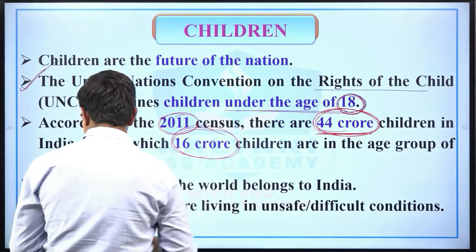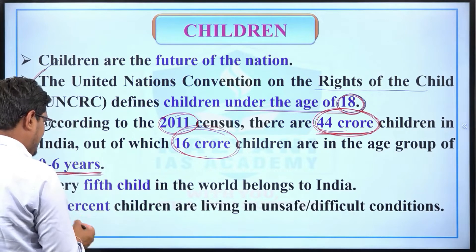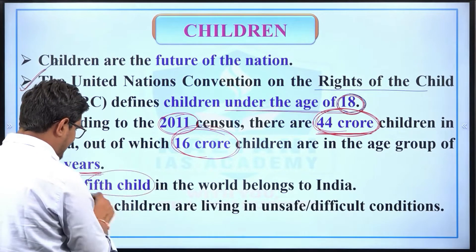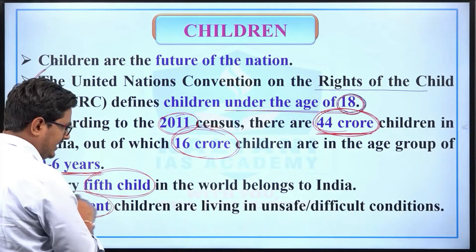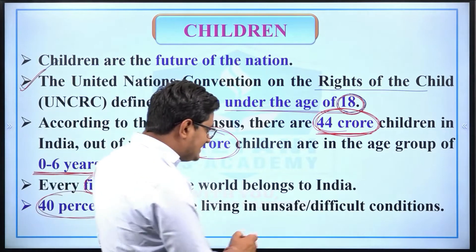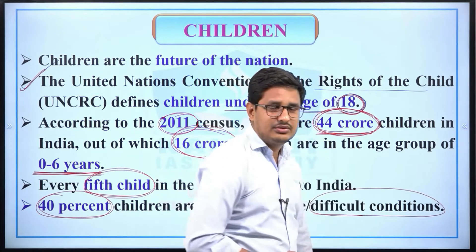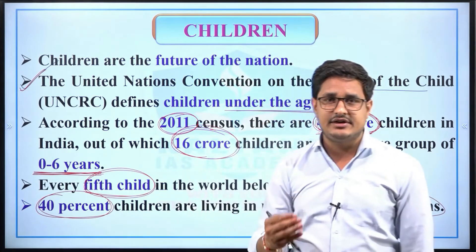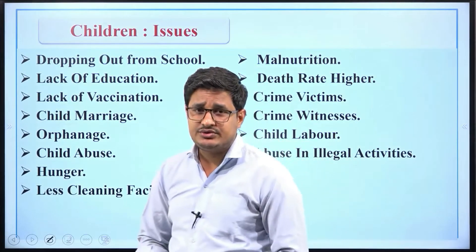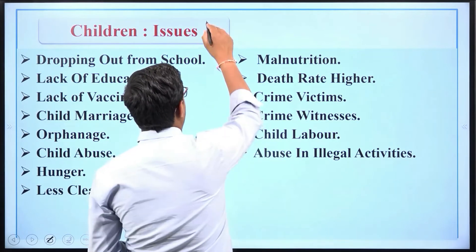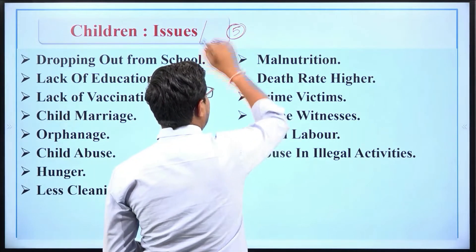We can assume that every fifth child in the world belongs to India. About 40% of children are living in unsafe or difficult conditions, and basic facilities are not being provided to them. Now we will study issues and challenges of children — a five-mark question can be asked in the examination on this topic.